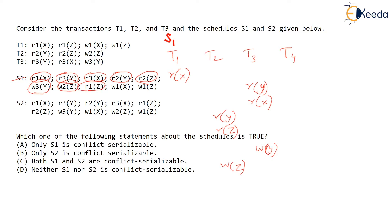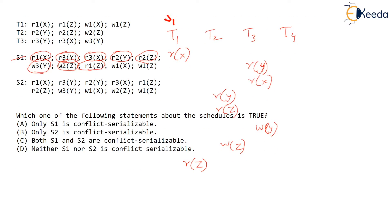Back to transaction T1: the next operation is RZ, then W1X — so that is WX under T1 — and then W1Z, so WZ under T1. There are only three transactions; I unnecessarily represented T4 earlier. This completes the interleaved operations in schedule S1.